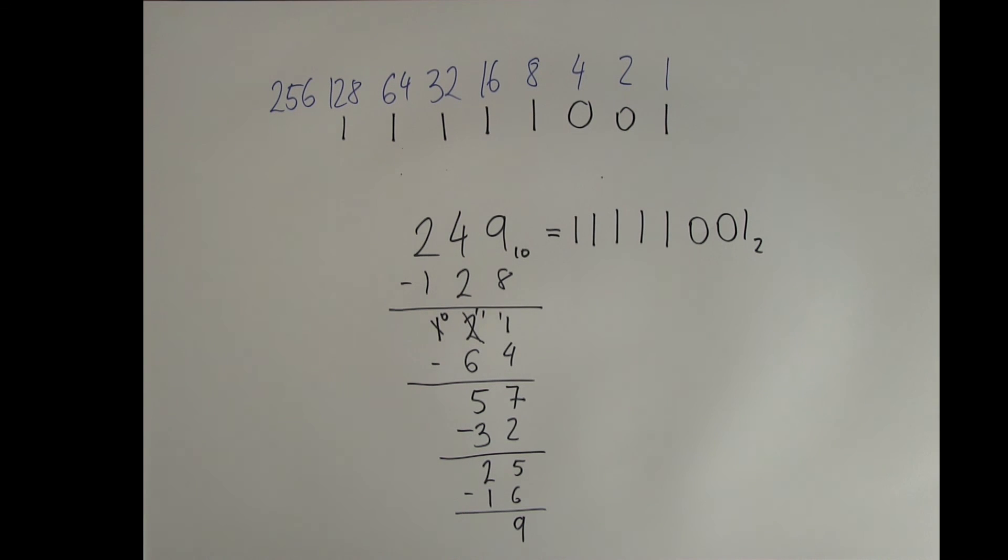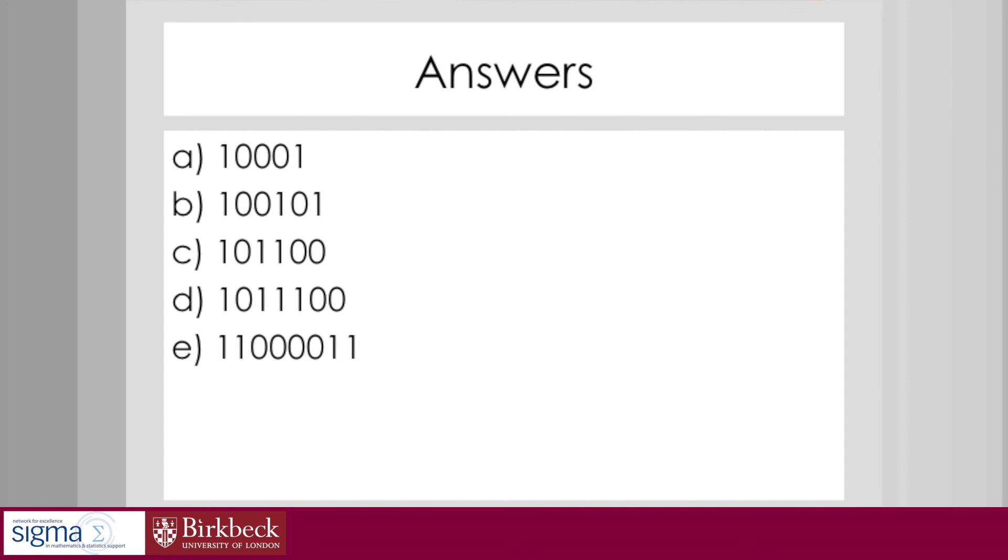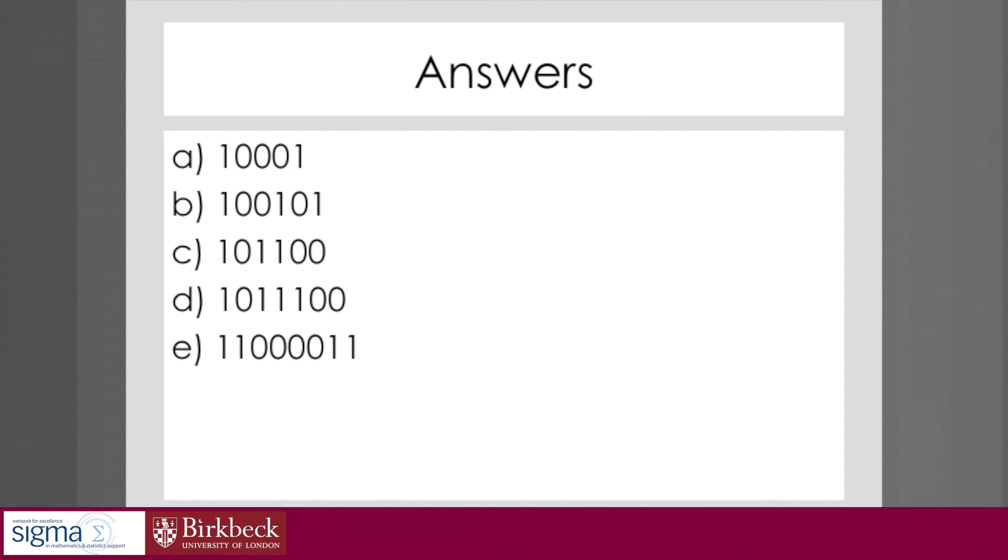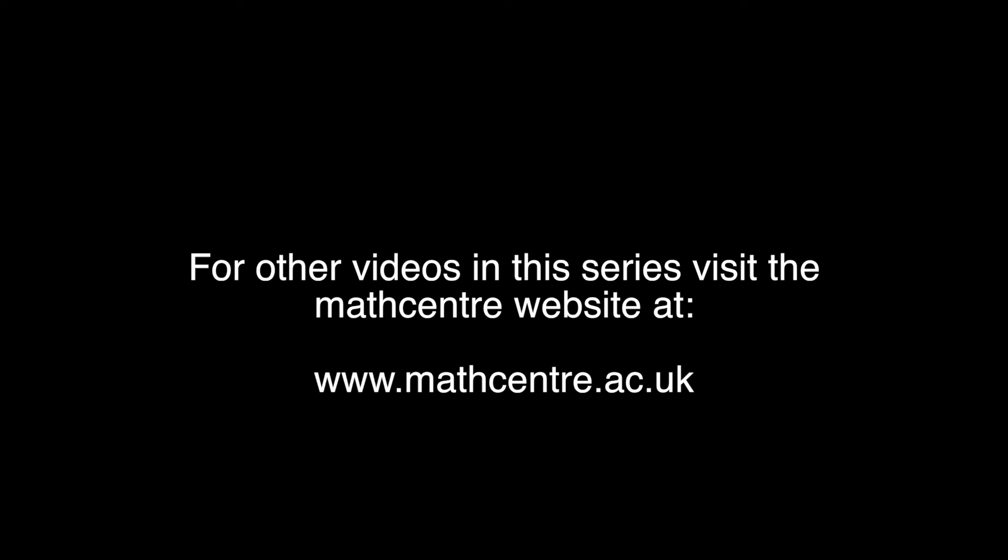This was our last example. I am hoping that you understand how to convert decimal numbers to binary numbers using the place values and that you probably find it easy. In the next minute you will have some opportunities to practice these questions yourself and you will have the answers after. These are the practice questions. And, here are the answers.